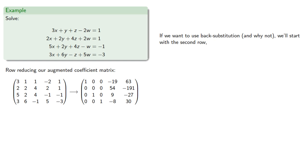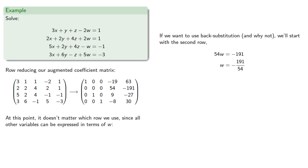And if we want to use back substitution — and why not — we'll start with the second row. At this point it doesn't matter which row we use since all the other variables can be expressed in terms of w, and so we find the solution.